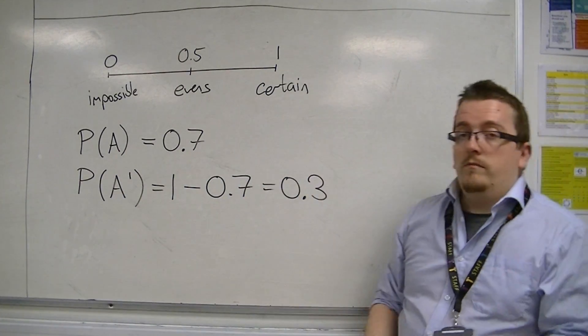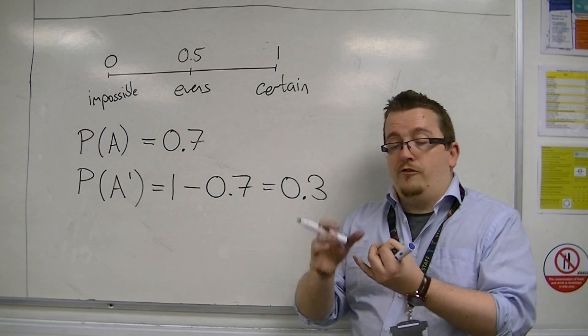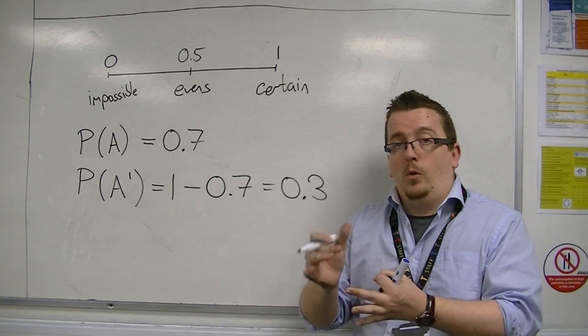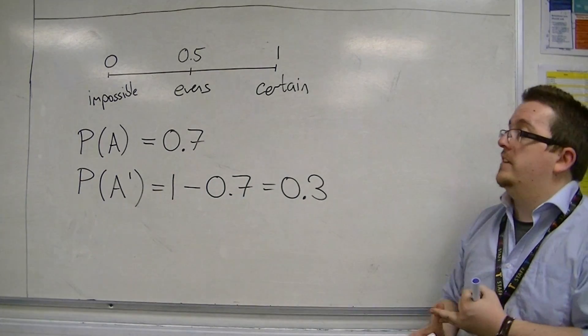Probabilities between 0 and 1 are usually given as either a fraction, a decimal, or sometimes as a percentage, but usually as a fraction and a decimal.